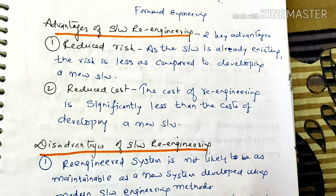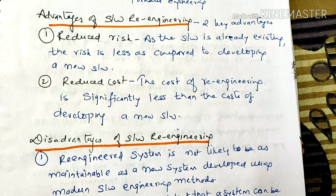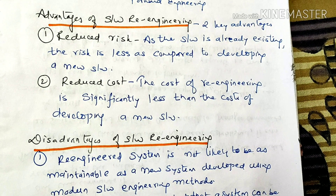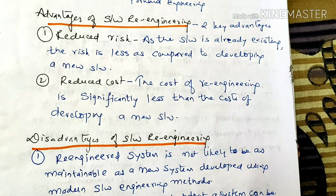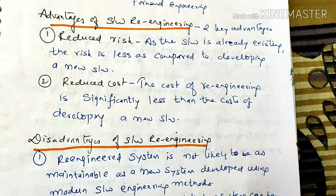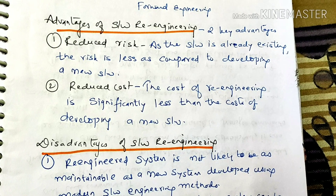Now we are looking at advantages and disadvantages of software re-engineering. There are two key advantages. The first is Reduced Risk. As the software is already existing, the risk is less as compared to developing new software. So here you can reduce risk because you are just re-engineering the software.